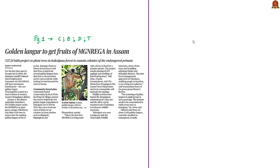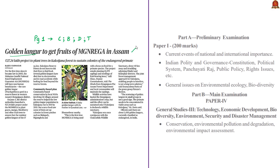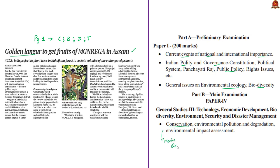The next news article is about the Golden Langur, titled 'Golden Langur to get fruits of MGNREGA in Assam.' The analysis will be relevant in prelims preparation under current events of national importance, Indian polity and governance, and general issues on environmental ecology and biodiversity. This news can also be quoted as an example for environmental conservation in General Studies Paper 3 under the topic of conservation.